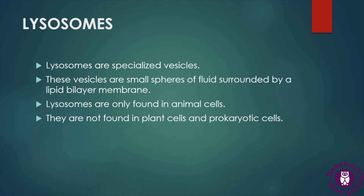In this video lecture we are going to discuss about an important cell organelle named as lysosome. Lysosomes are defined as specialized vesicles — small sphere-like structures which are filled with a fluid and surrounded by a lipid bilayer membrane. They are single-membrane organelles found in the cytoplasm of eukaryotic cells, but lysosomes are not found in prokaryotic cells.